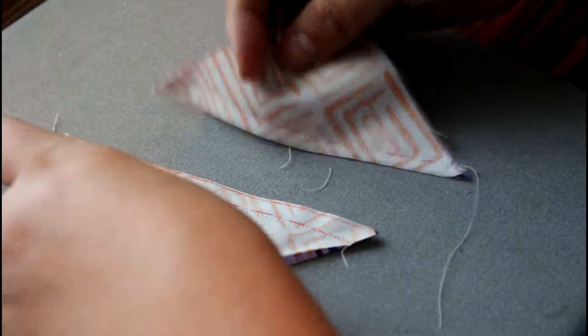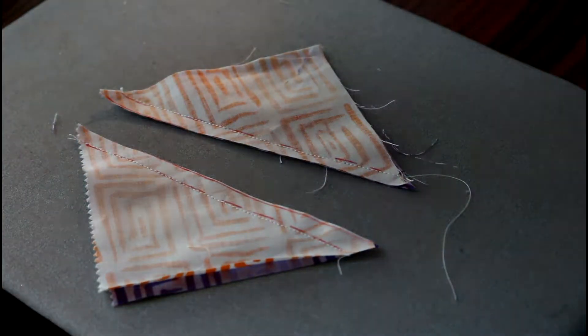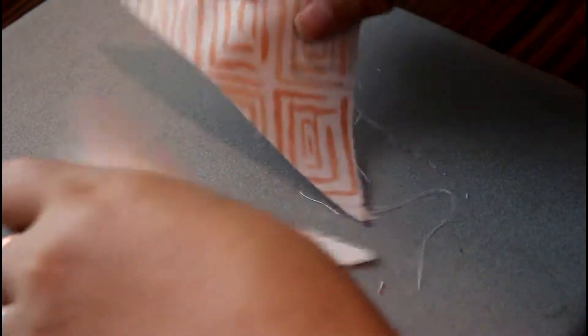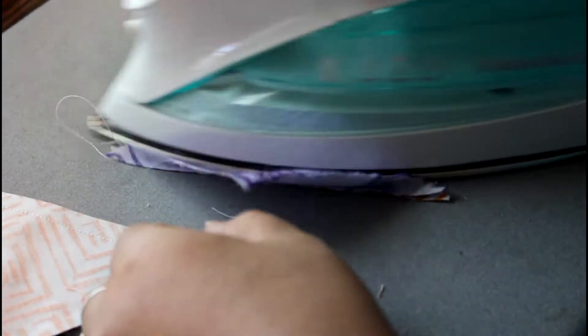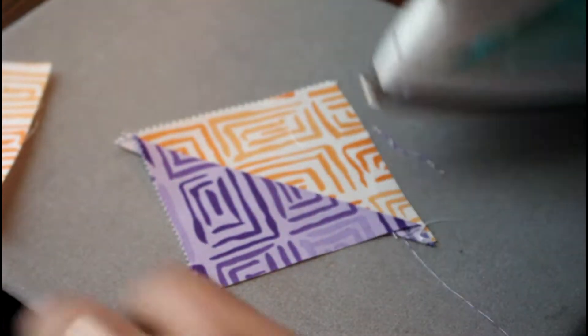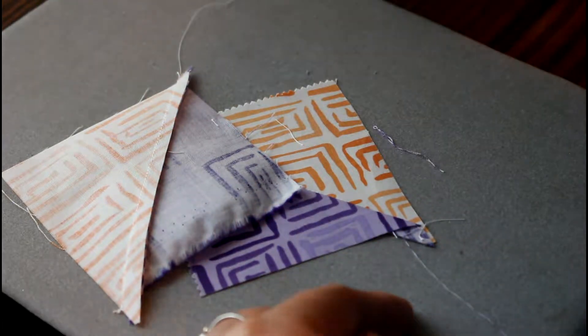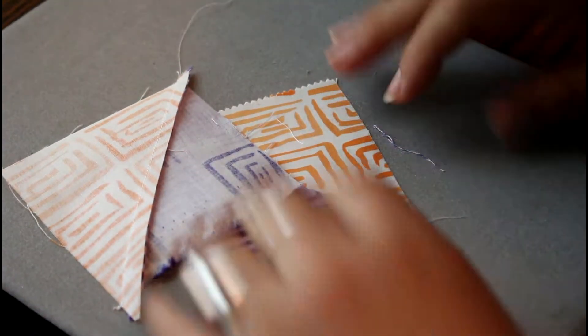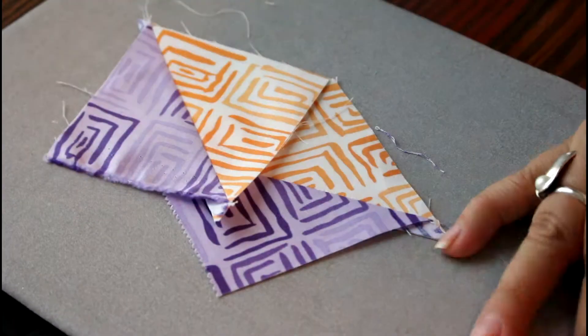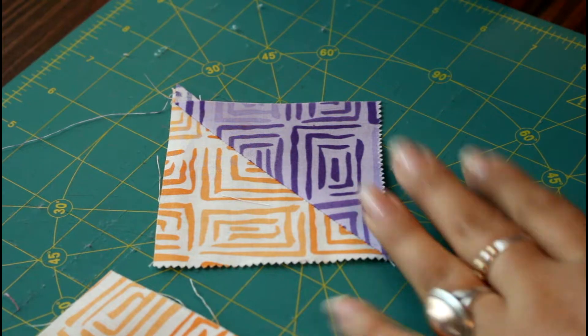Okay, so here I have my two pieces that I just sewn and I already trimmed them. What I'm going to do is iron them and we're going to set the seam, and we're going to open them. Usually I open with the dark on top because I want the dark area to have the seam - I want my seam to lean towards the dark area.